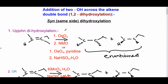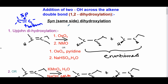In this lecture we're going to discuss addition of two OH groups across the double bond — that's called dihydroxylation — and the addition will happen from the same side of the alkene. Alkenes are usually planar, so addition can happen from the top or from the bottom, which means stereochemistry is involved.